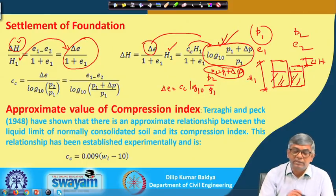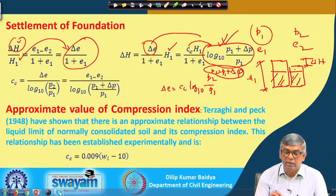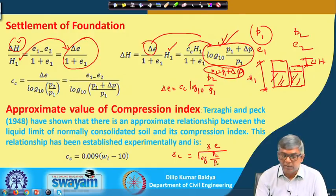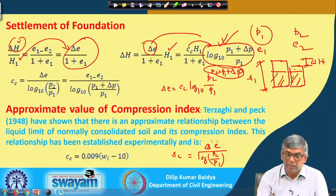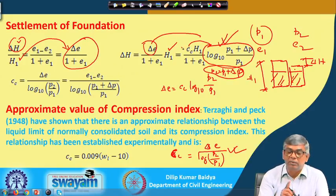As explained, Cc is obtained by inverting the relationship: Cc equals delta E divided by log(P2/P1). If you have void ratio versus pressure data and plot it on a semi-log scale for a normally consolidated soil, you can determine the slope Cc from the E-log-p curve. That is one unknown needed to calculate consolidation settlement.